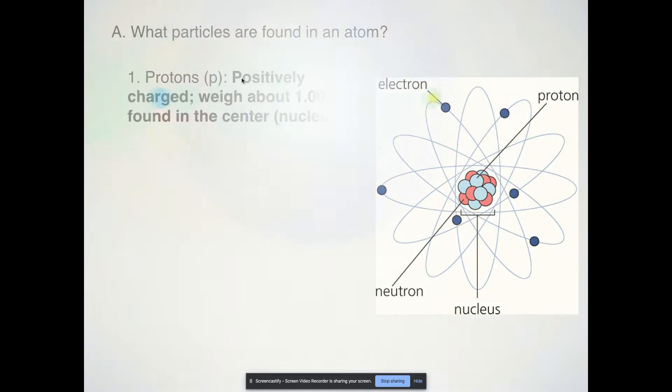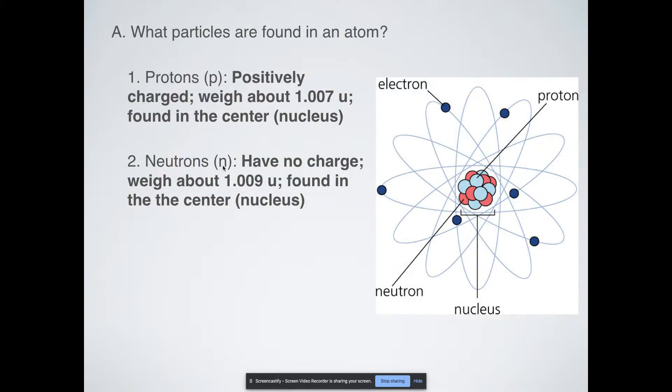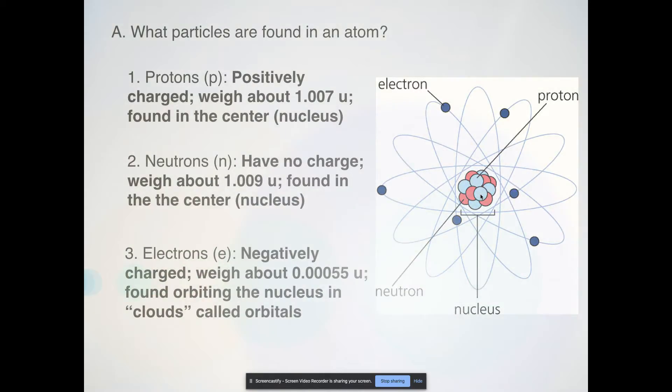So what particles can be found in the atom? We've got protons, abbreviated as the letter p, positively charged. They weigh about 1.007 atomic mass units and they're found in the center of the nucleus. Neutrons, abbreviated as n, have no charge. That's what neutral means and they weigh a little bit more than a proton, 1.009 atomic mass units. They're also found in the center of the atom, the nucleus.